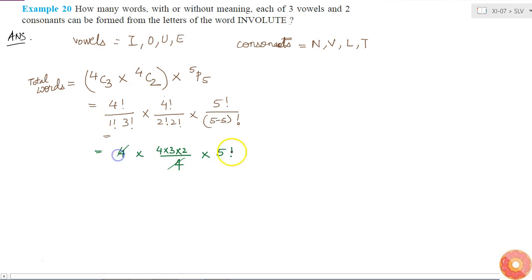I can cancel 4, so I will get 4 times 3 times 2, which is 24 times 5 factorial is 120. So the value of this will be 2880 different words that can be formed.